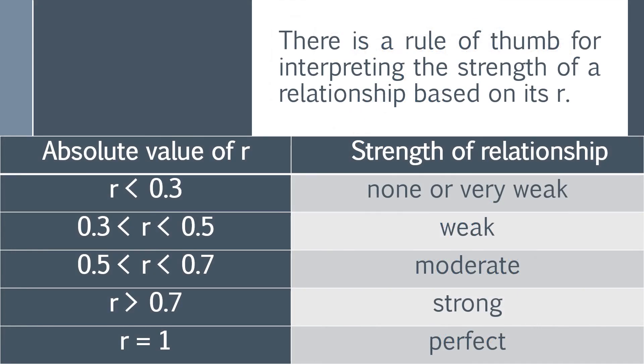By the way, this is a rule of thumb for interpreting the strength of a relationship based on its r. We are going to take the absolute value of r to determine its relationship. If it is less than 0.3, you may say that it may be none or very weak relation. If it falls between 0.3 to 0.5, it is weak. If it is 0.5 to 0.7, it is moderate. If it is greater than 0.7 but less than 1, it is strong. But if it is equal to 1, that will be perfect correlation.